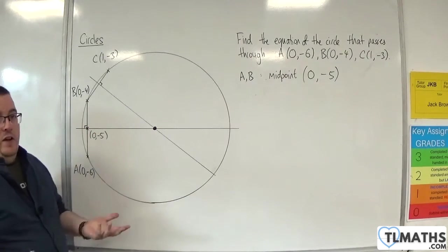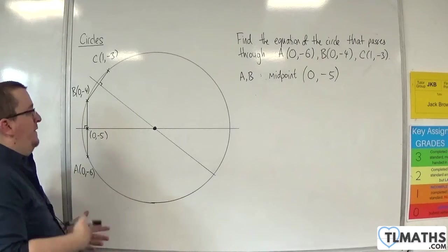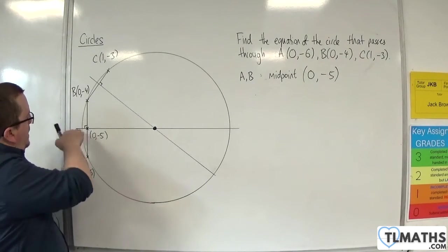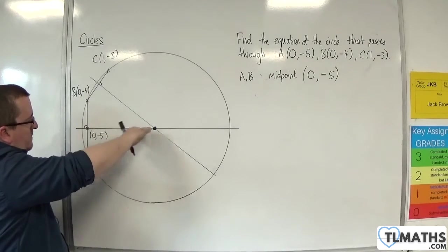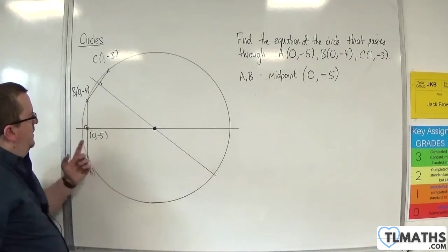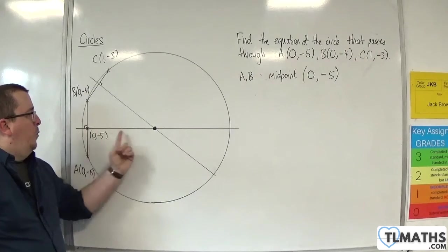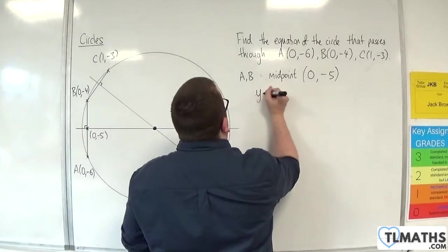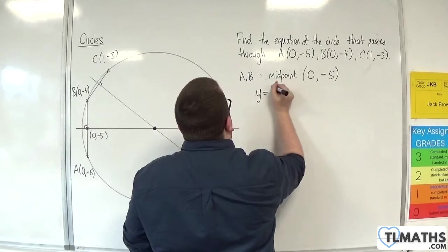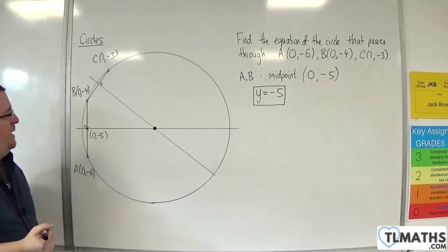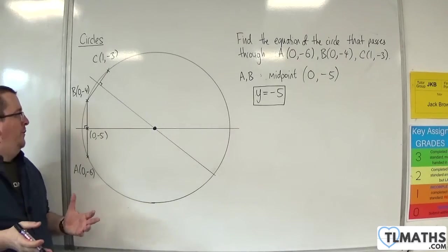Now, the next thing I would do in general is find the gradient of this line, then use the negative reciprocal. But because this is a vertical line, I know that it's just going to be a horizontal line for the perpendicular bisector. So this line is just going to be y = -5. So that one's pretty straightforward to do.